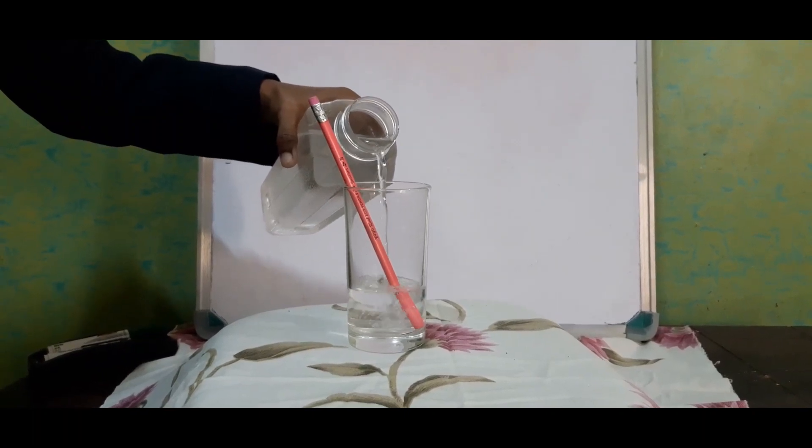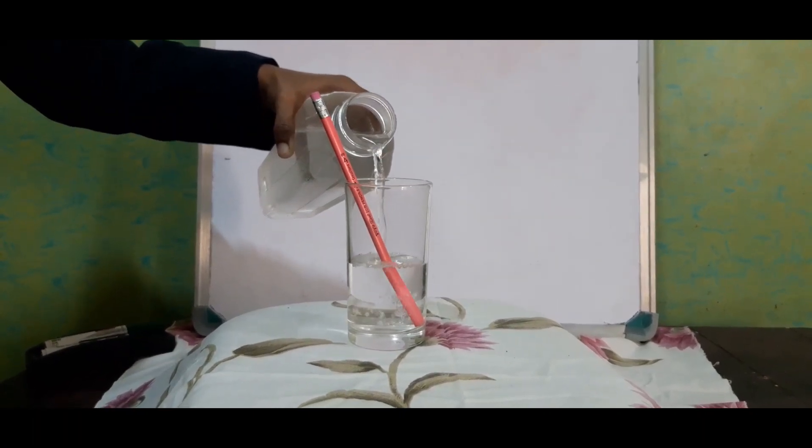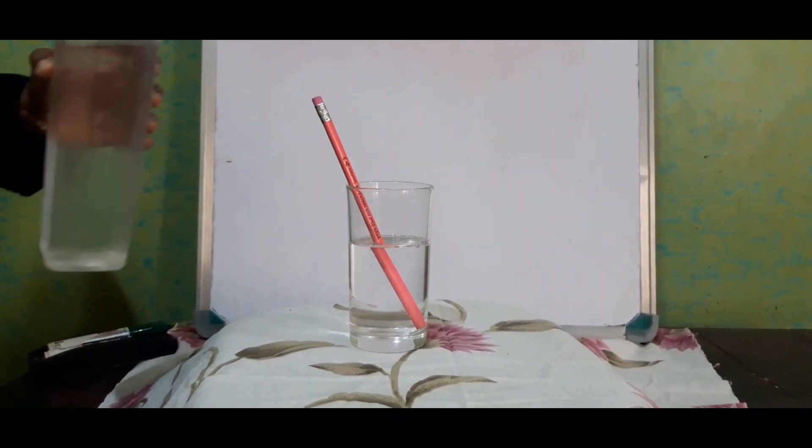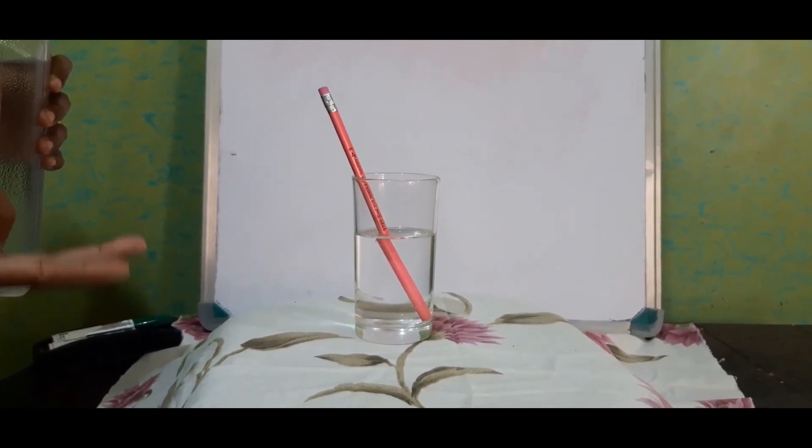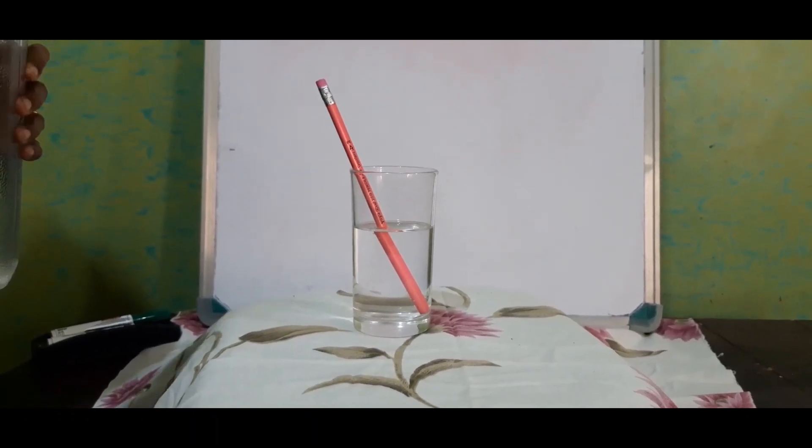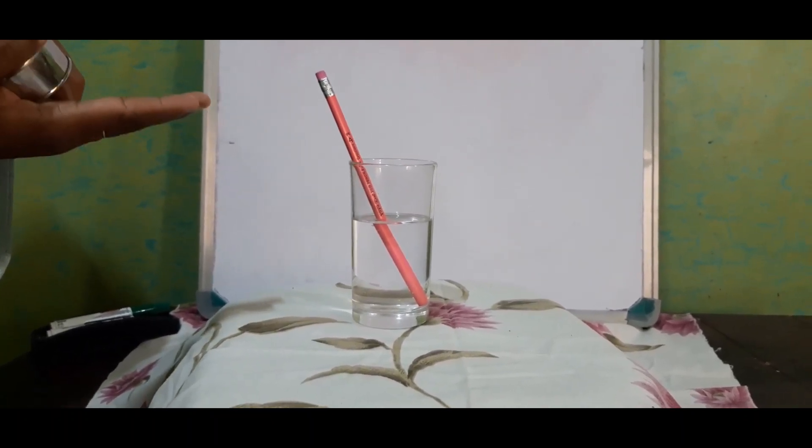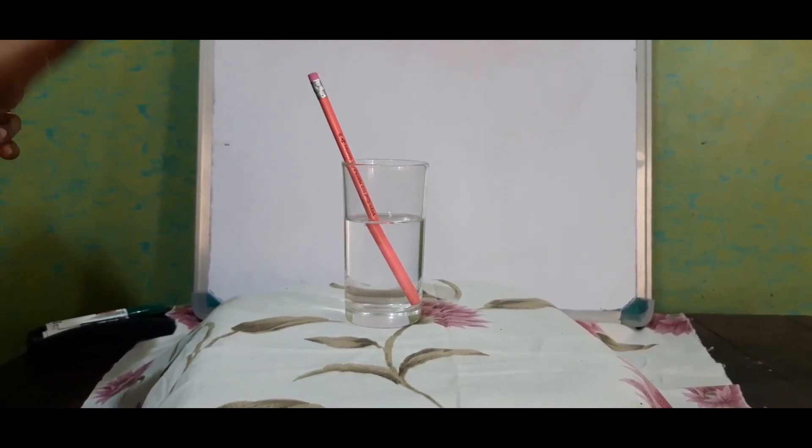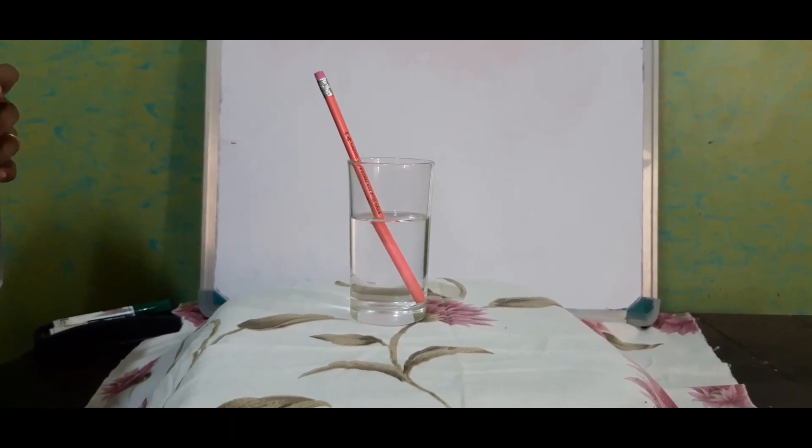Slowly the light ray is traveling from a rarer medium—consider the air as a rarer medium and water as a denser medium. We can easily understand instead of a single pencil, now we are seeing like a broken pencil. That is actually what happens in the case of refraction of light.